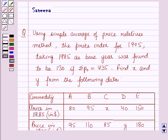Hello and welcome to the session. In this session we will discuss a question which says that using the simple average of price related method, the price index for 1995 taking 1985 as base year was found to be 130. If summation p0 is equal to 435, find x and y from the following data.